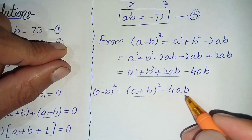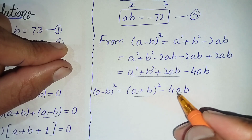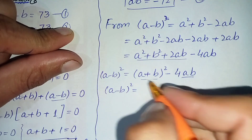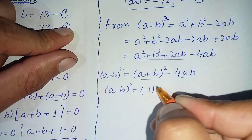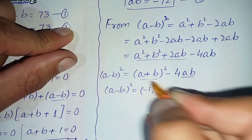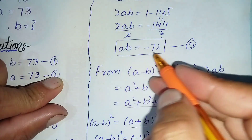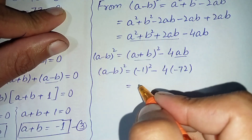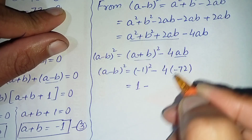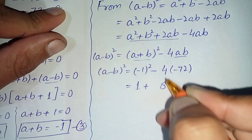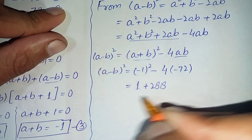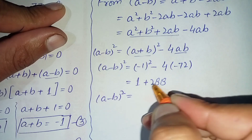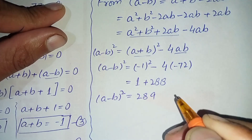From equation number three, a plus b equals minus 1, and from equation number five, ab equals minus 72. Substituting: (a minus b) squared equals (minus 1) squared minus 4 times (minus 72). This gives 1 plus 288, so (a minus b) squared equals 289.